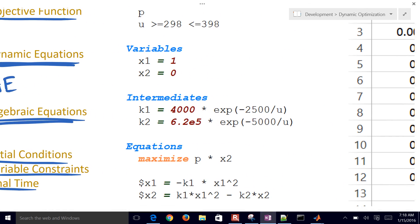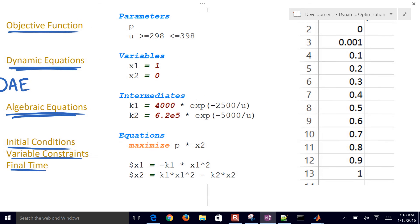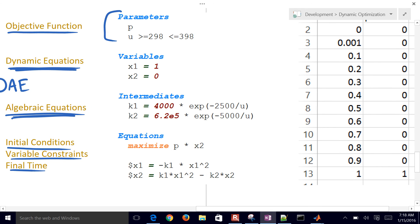And to do that, we created this model file right here with parameters, variables. I put in some intermediates, but you could have just put those directly into the equations. It just makes it a little bit easier to read because these are substituted down here. And so it makes it a little bit easier to read the model when you use intermediates.